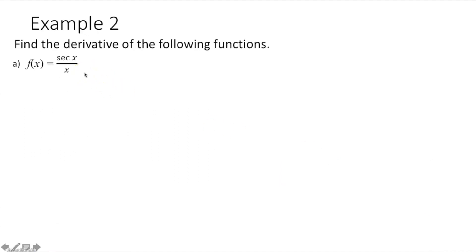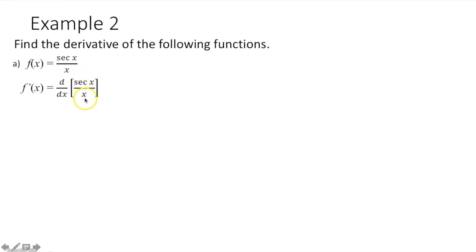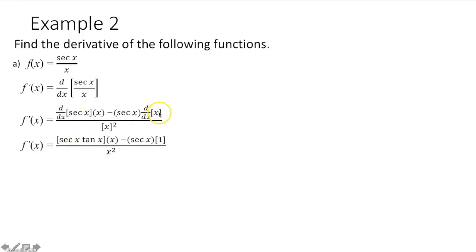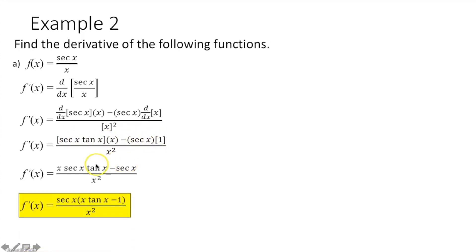Example 2, part a: we're finding the derivative of a quotient of two functions, so we use the quotient rule — derivative of numerator times denominator, minus numerator times derivative of denominator, all over denominator squared. The derivative of secant x is secant x tan x, and the derivative of x is 1. We simplify: x times secant x tan x minus secant x times 1, over x squared. Each term in the numerator has a secant x, so we factor it out and write the answer as secant x times the quantity (x tan x minus 1), all over x squared.